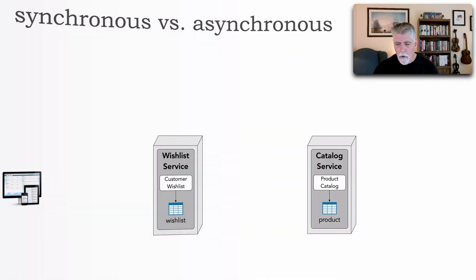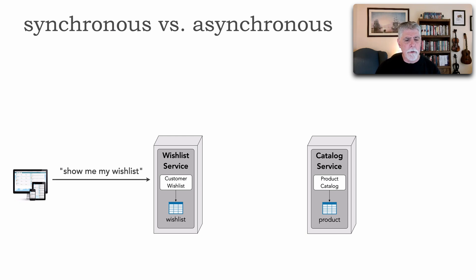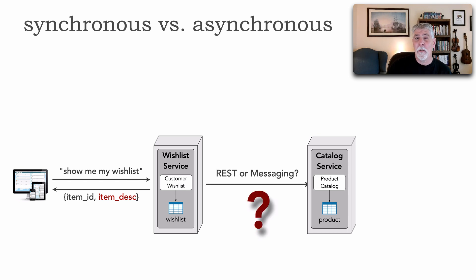There's one other thing I want to talk about — a different kind of workflow and use case for choosing REST versus messaging. Let's say that I have a wishlist service and a corresponding catalog service. The user says 'show me my wishlist.' I need to return the item ID and all the item descriptions, but I don't have those descriptions — they're over in the catalog service. So I have to go to the catalog service and ask for those item descriptions. Should I use REST or messaging? Sync or async?